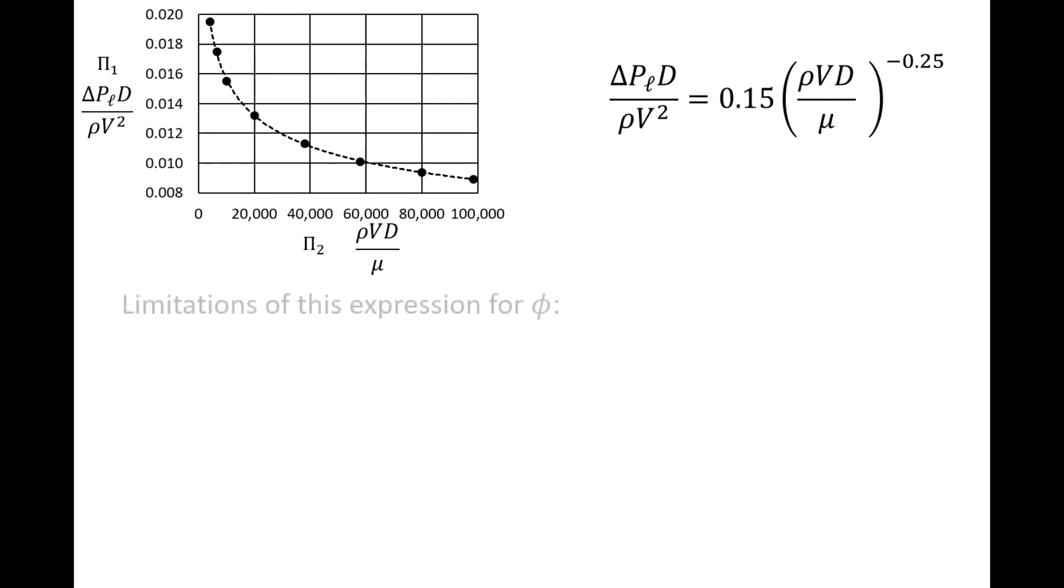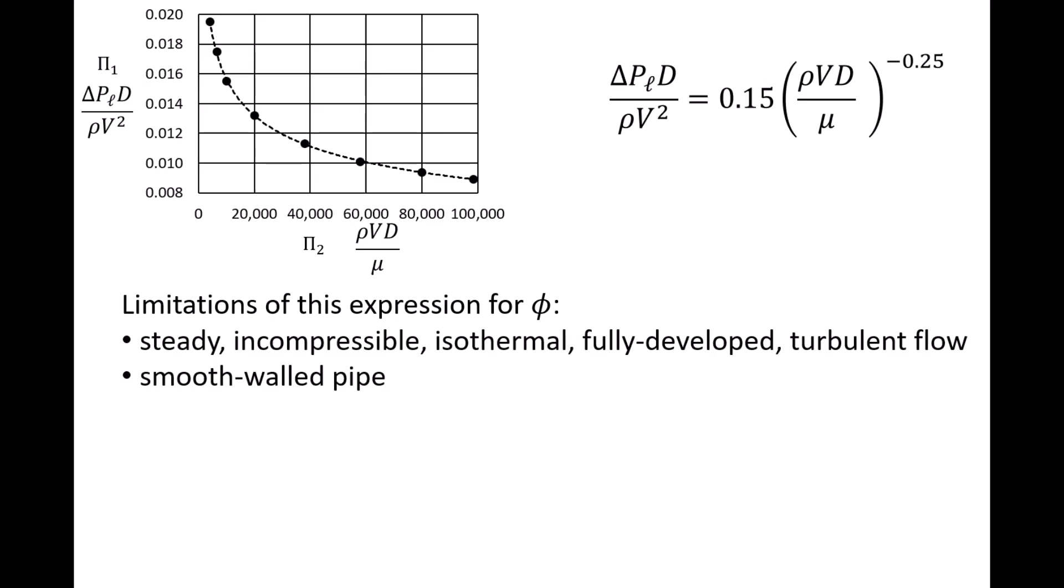It's important to keep in mind the limitations of this expression. The flow must be steady, incompressible, isothermal, fully developed, and turbulent, and the absolute roughness of the pipe wall must be negligible. Otherwise, this relationship may produce inaccurate predictions for delta P/L.